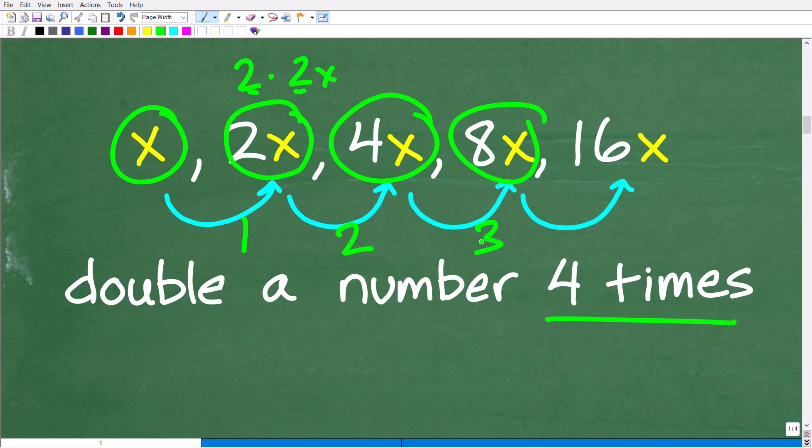And then, we're going to double one more time to get our doubling four times. So, 8x times 2 gets us to 16x. All right. So, this was our fourth time that we doubled this number x. So, one more time. So, x, this is our first double, 2x, 4x, 8x, 16x.